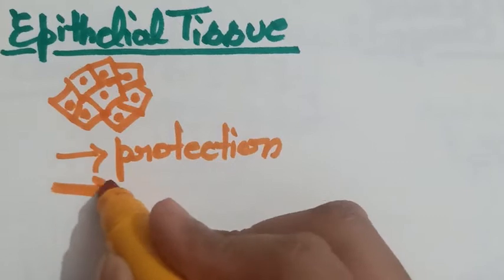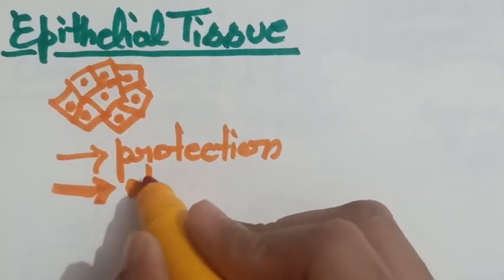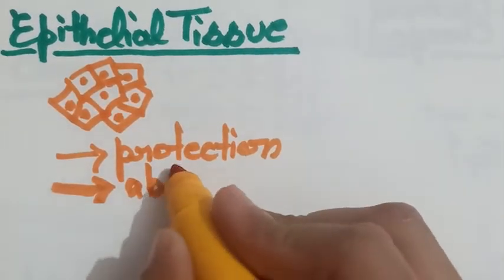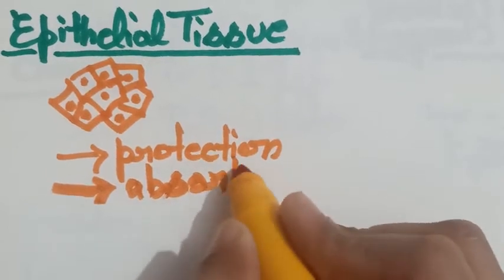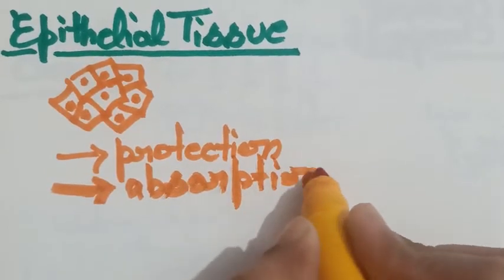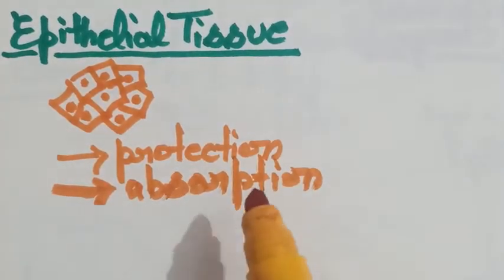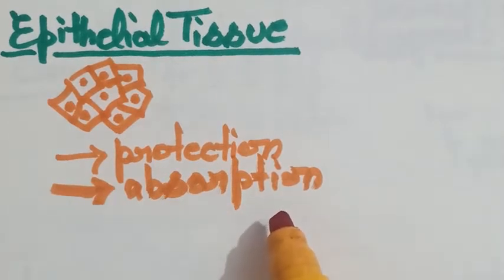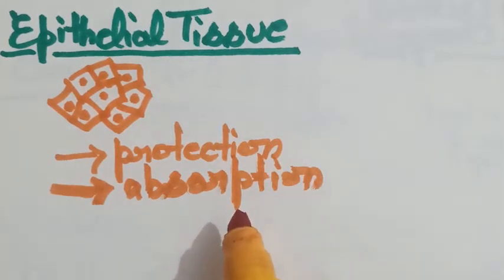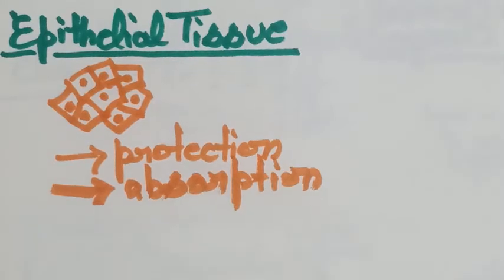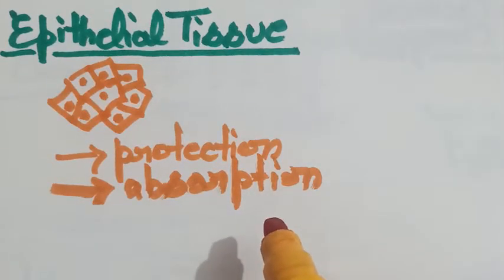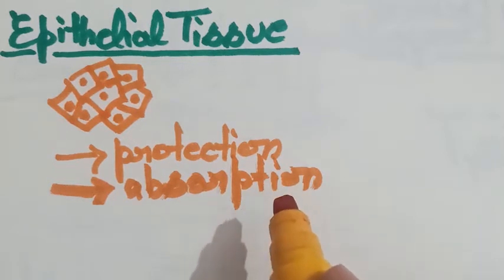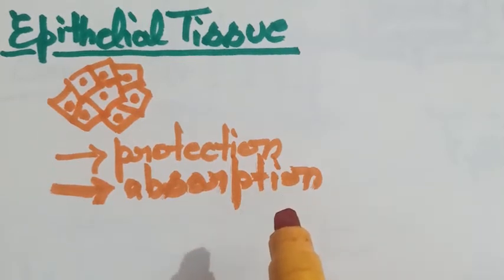Now next one is they, in some cases, they are absorptive. Means they show the process of absorption. So they also help in the absorption, like they are present in the intestine, and they absorb the digested food, they help in the absorption of digested food.